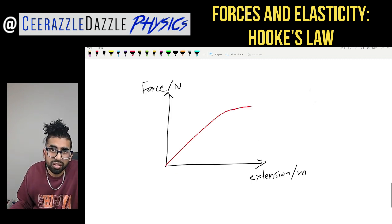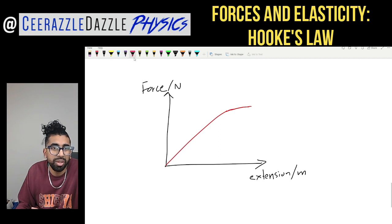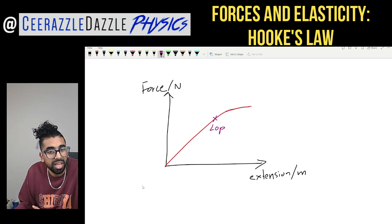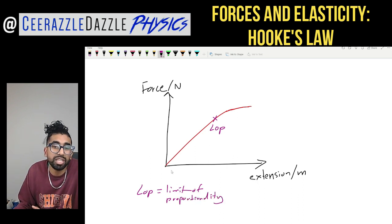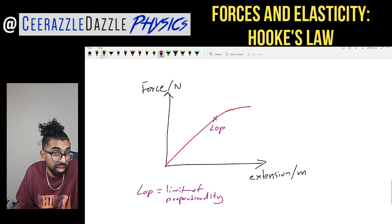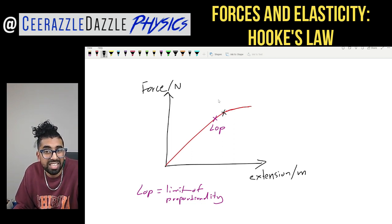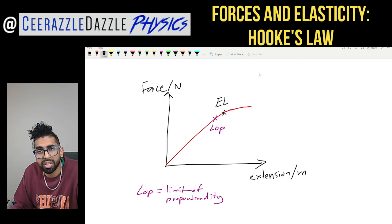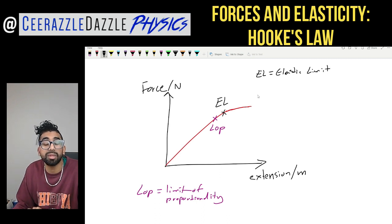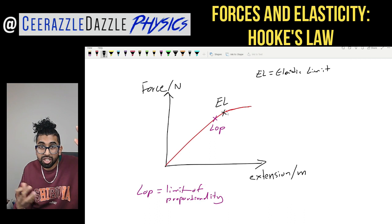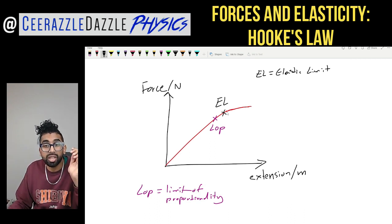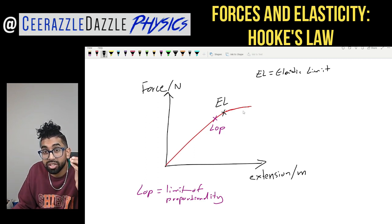In real life, force-extension graphs don't go completely straight — they start to curve off later on. We need to label a couple of key points. The last point at which the graph is straight is the limit of proportionality, LOP.